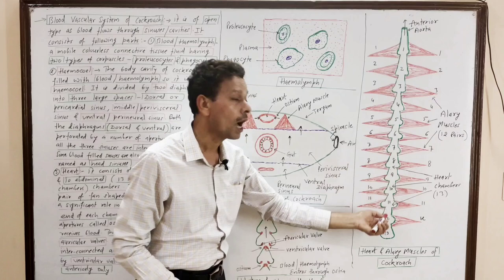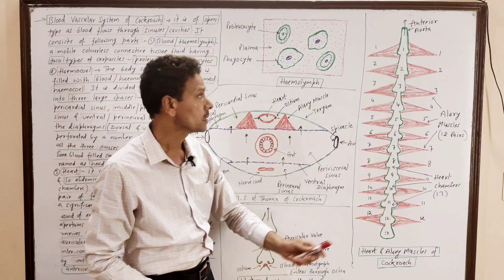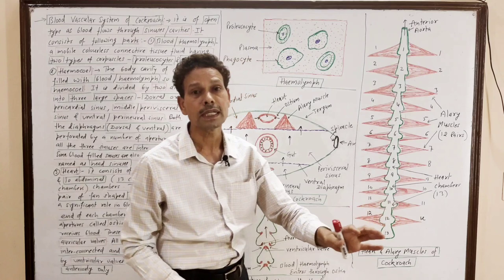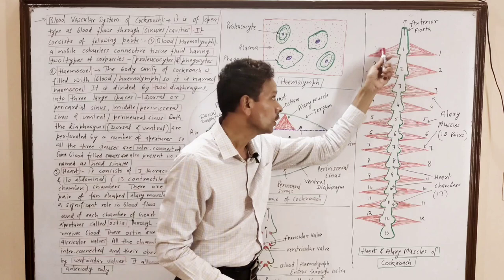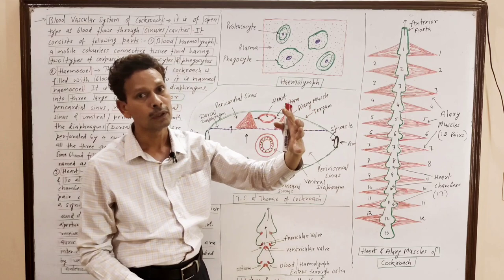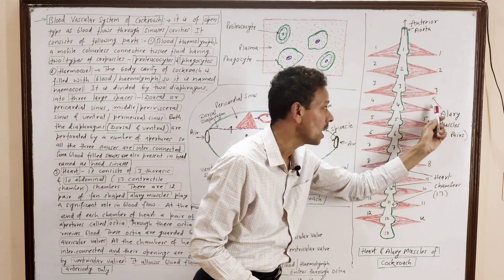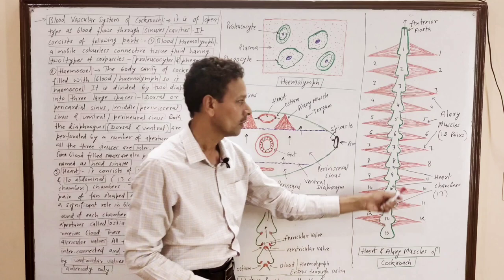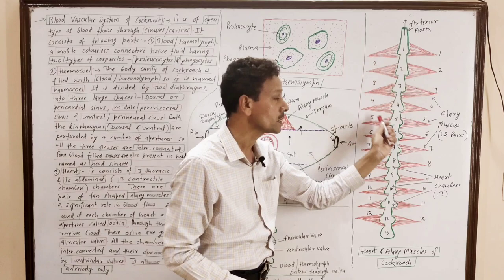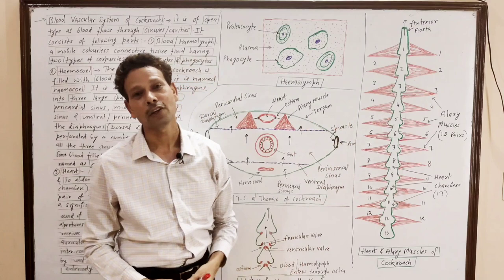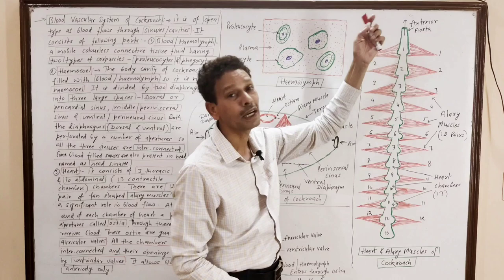Associated with this circulatory system are 12 pairs of triangular fan-shaped muscles called alary muscles, which play a significant role in blood flow. The heart is divided into 13 chambers. Blood flow is always in one direction — the anterior direction, toward the head region.